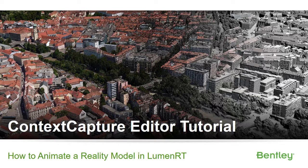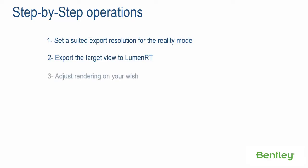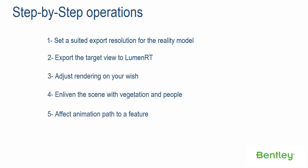Context Capture Editor Tutorial: How to Animate a Reality Model in LumenRT. Step-by-step operations: Step 1 — Set a suited export resolution for the reality model. Step 2 — Export the target view to LumenRT. Step 3 — Adjust rendering as desired. Step 4 — Enliven the scene with vegetation and people. Step 5 — Affect animation path to a feature. Step 6 — Create and export a short movie.